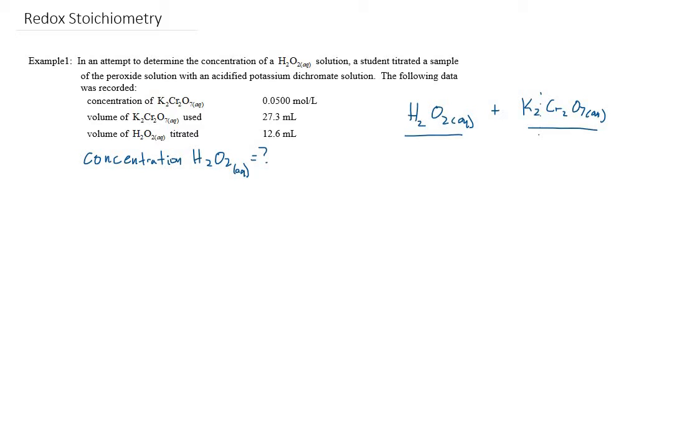So to determine the reaction that takes place, we generally start with listing all the species that we have present. And we're going to ask ourselves, what of those species will react together. So let's start with listing them. We have hydrogen peroxide present. We're told that the hydrogen peroxide is some concentration in solution, which means it has to be dissolved in water. So there has to also be water present.